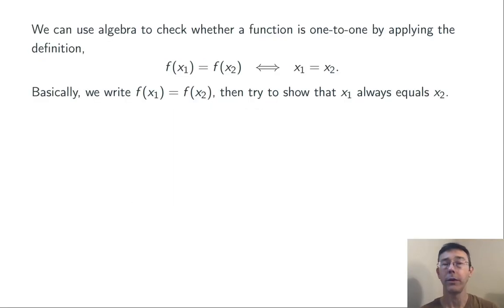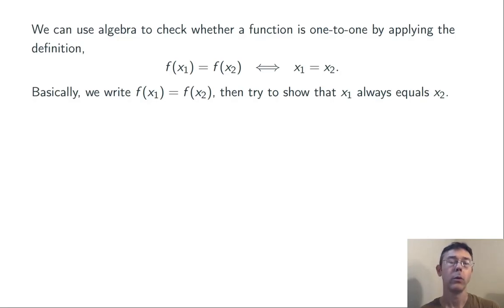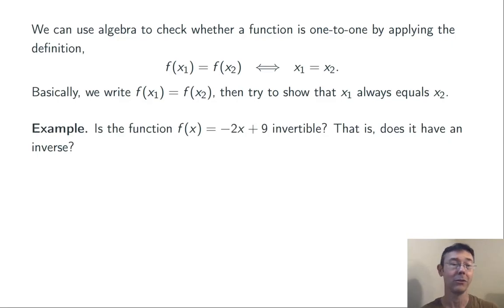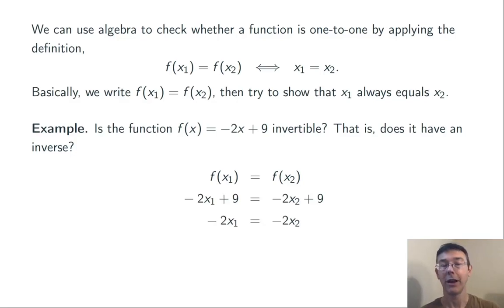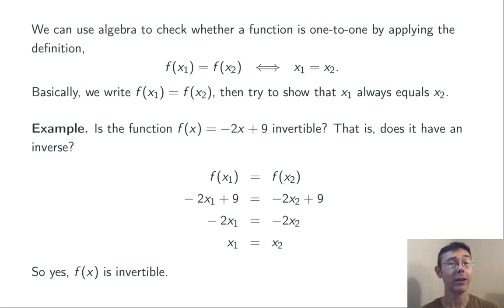We can check algebraically whether a function f is one-to-one by applying the formal definition: f of x1 equals f of x2 implies x1 equals x2. We plug x1 and x2 into the function and use algebra to show that x1 equals x2. For example, take f of x equals negative 2x plus 9. Setting f of x1 equal to f of x2 and plugging in, then subtracting 9 from both sides and dividing by negative 2, we get x1 equals x2. Therefore, the function is one-to-one and has an inverse.